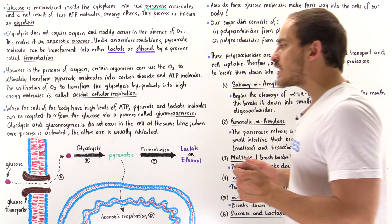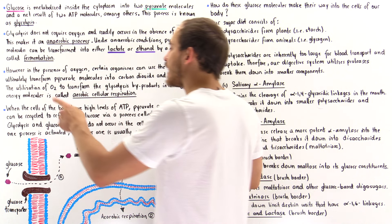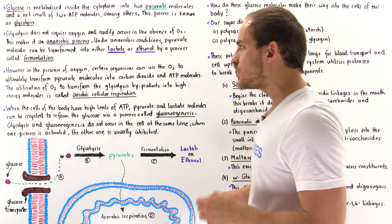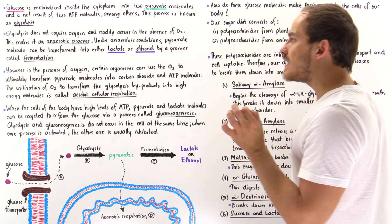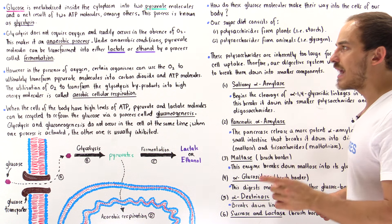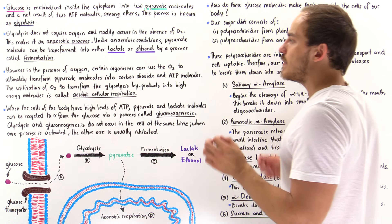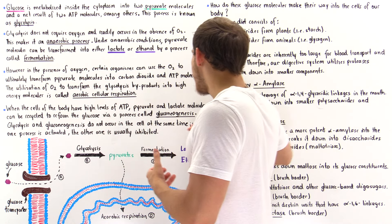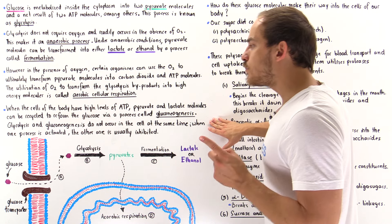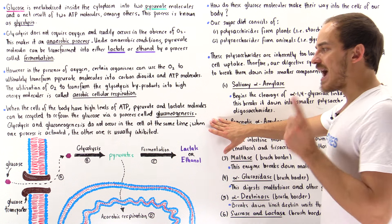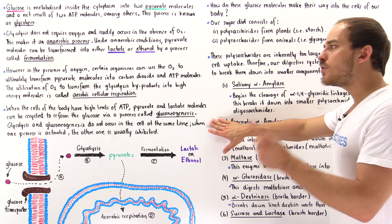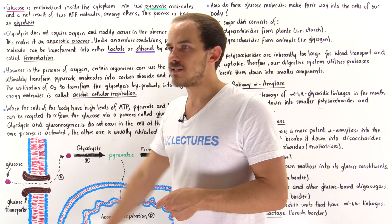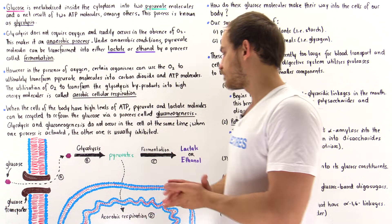In fact, glycolysis and gluconeogenesis do not take place at the same exact moment in time. When one process is activated, the other is usually inhibited, and vice versa.